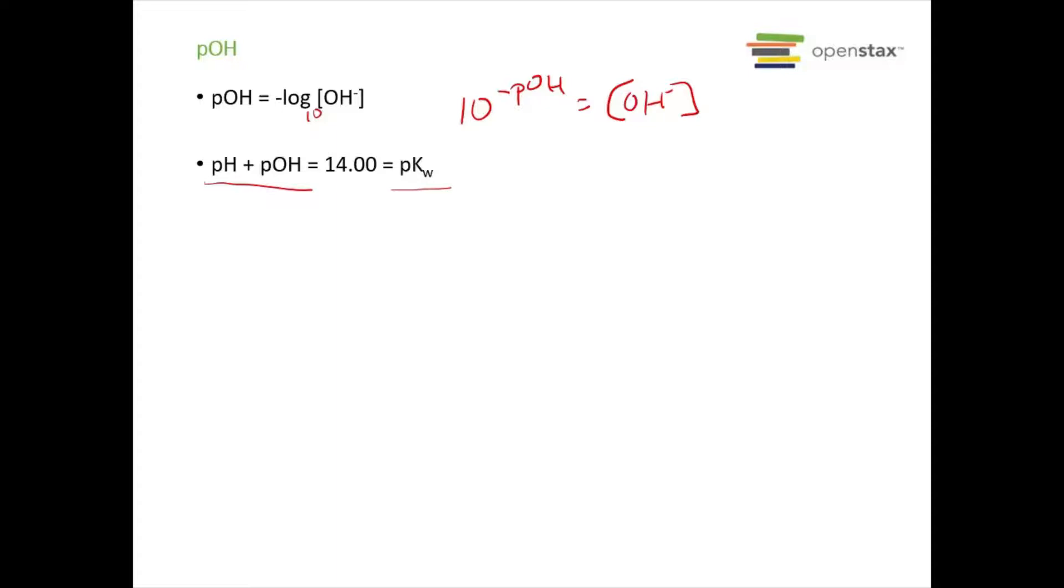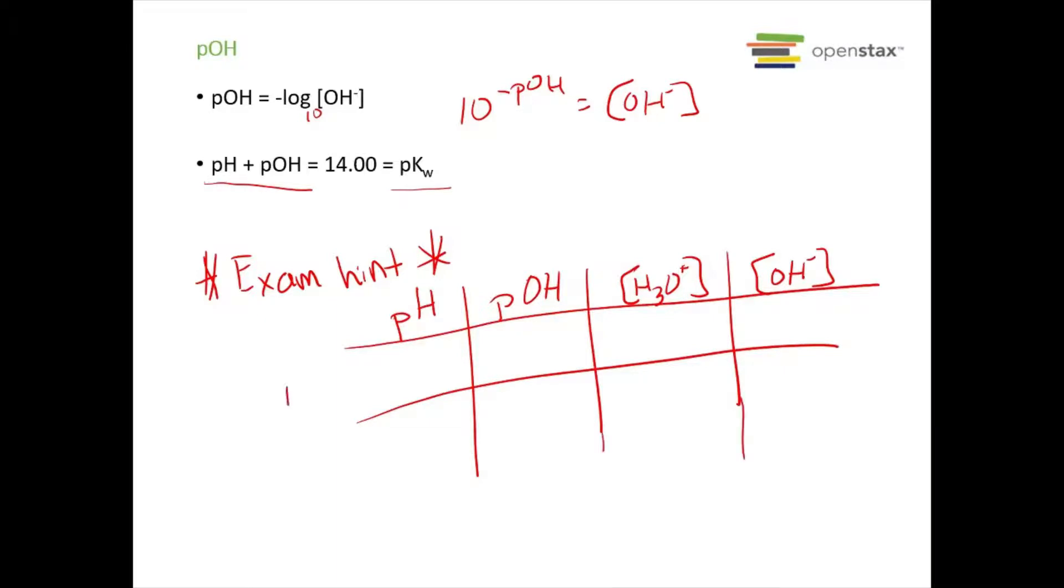So in the past on exams, here's maybe an exam hint for those of you that are actually watching these videos. I might give you something where it'll be a table that says something like pH, pOH, H3O+, OH-, and I want you to fill in the blanks. So like, number one, then maybe I told you the pH is 2.01, and you have to fill in what the other three parts are. And then there's another part in the table where I give you OH-, and I tell you it's 1.3 times 10 to the negative 10th molar. And now you have to fill in the other parts.